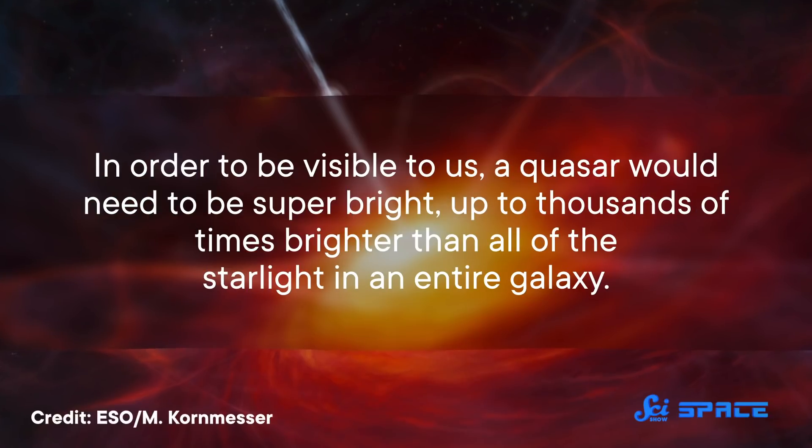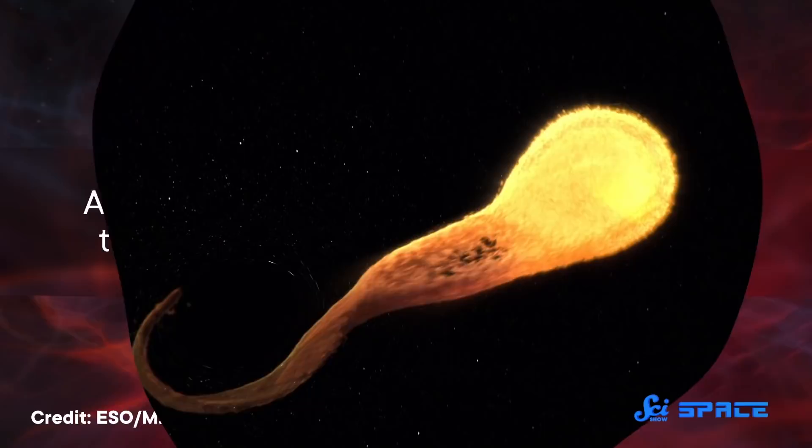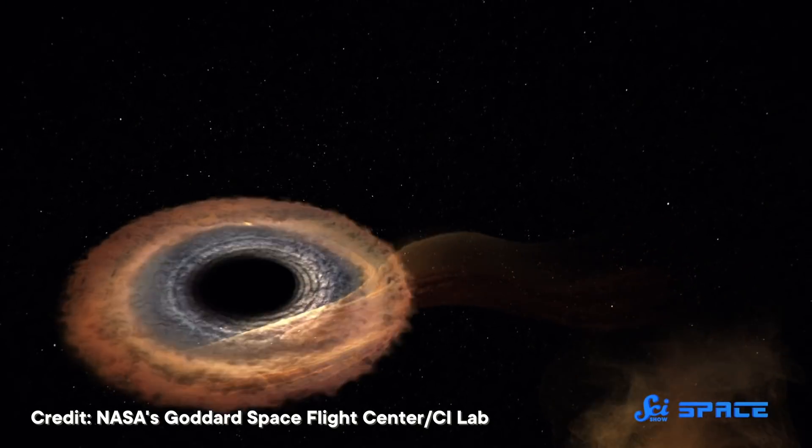So in order to be visible to us, a quasar would need to be super bright, up to thousands of times brighter than all of the starlight in an entire galaxy. An impressive feat, considering that some of them are as small as a single solar system. Scientists did eventually learn how all of this is possible.